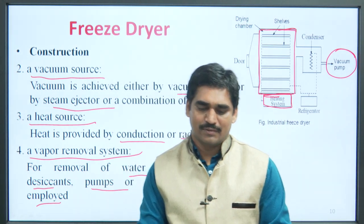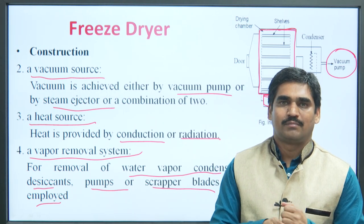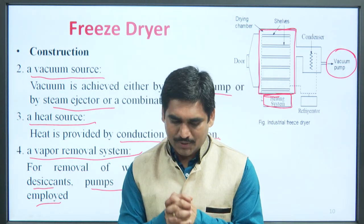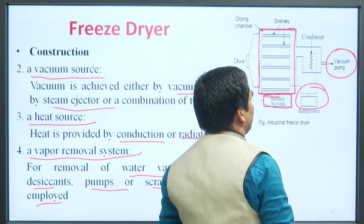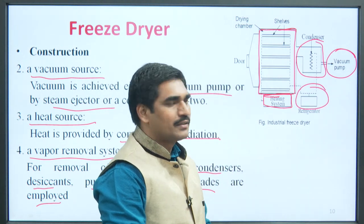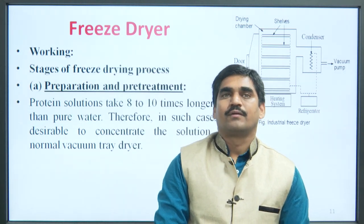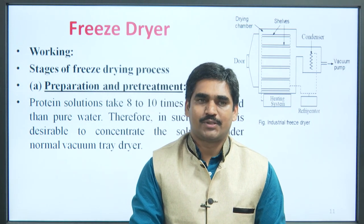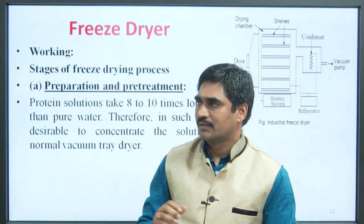With the help of any of these equipment — water vapour condenser, desiccant pump, or scraper blades — vapours are removed from the system. Here you will also find a refrigerator attached with a condenser to condense the vapours. Now, working of freeze dryer — a typical freeze dryer has five stages in its working process.